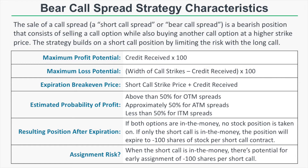The strategy builds on a short call position by limiting the risk with the long call. If you are bearish on a stock and you don't want to short the stock or sell a naked call, you could sell a bear call spread — that'll give you bearish exposure to the stock but with significantly less loss potential than selling shares outright or selling a naked call.